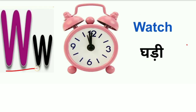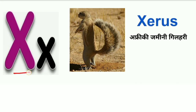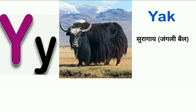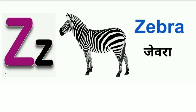W for wagon. Wagon means gaadi. X for xiras. Xiras means Afriki zamini gilehri. Y for zebra. Zebra means zebra.